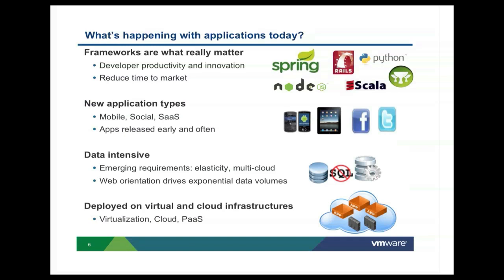So why do we need a different platform? What's changing in applications today? The first and probably most important aspect is frameworks. Developers want productivity, they want innovation, they want to reduce time to market. They don't want to deal with a lot of stuff in the code that are not related to their business logic. If you look at frameworks like Node.js, Spring, Ruby on Rails, and many more, you see that they actually allow developers to focus on business logic and not around common things like opening database connections. New application types — much more mobile and social out there — and apps need to be released and updated early and frequently. Lots of new data services deployed on virtual or cloud infrastructure.